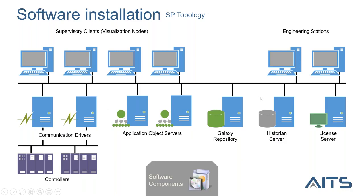In this topology you have two different networks: the application network and the field network. Sometimes if you have redundancy, you can have an internal application object server network — so three networks total: the internal redundancy network, the application network, and the field communication network. How to configure these I will show in the demo.